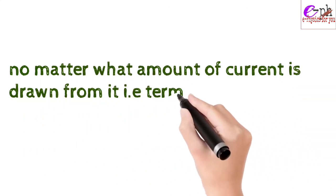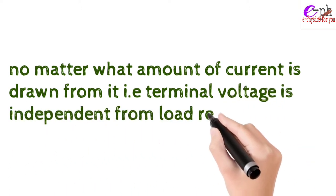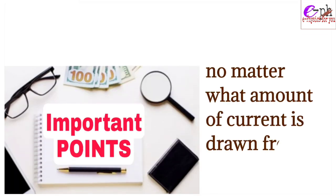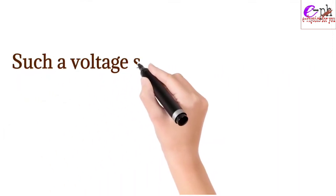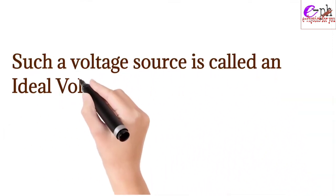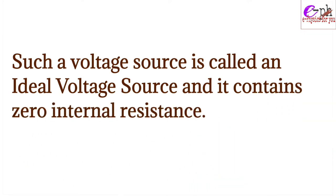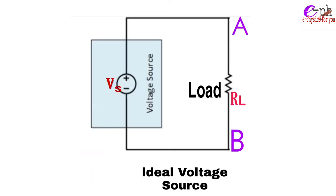No matter what amount of current is drawn from it, the terminal voltage is independent of the load resistance. Such a voltage source is called an ideal voltage source, and it contains zero internal resistance. This is the symbolic representation of the ideal and practical voltage source.